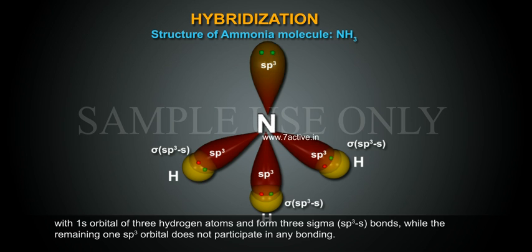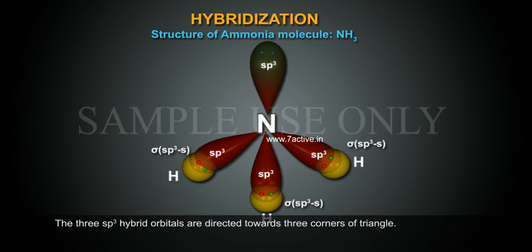While the remaining one sp3 orbital does not participate in any bonding. The three sp3 hybrid orbitals are directed towards three corners of triangle.